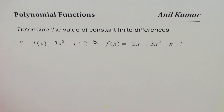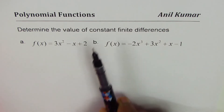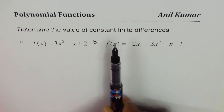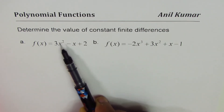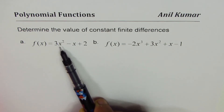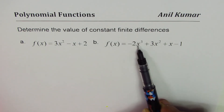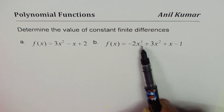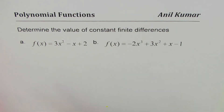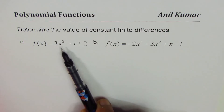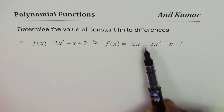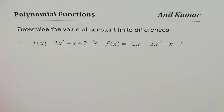To find the constant finite difference, we are clear that if a polynomial is of degree 2, the second difference is going to be constant. If a polynomial is of degree 3, then the third finite difference will be constant. So we expect the second finite difference to be constant for Part A, and the third for Part B, which is a polynomial of degree 3.